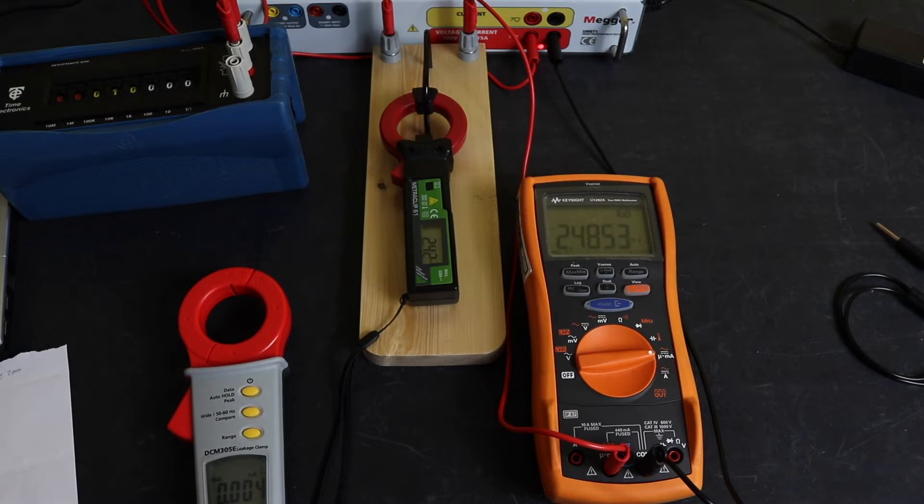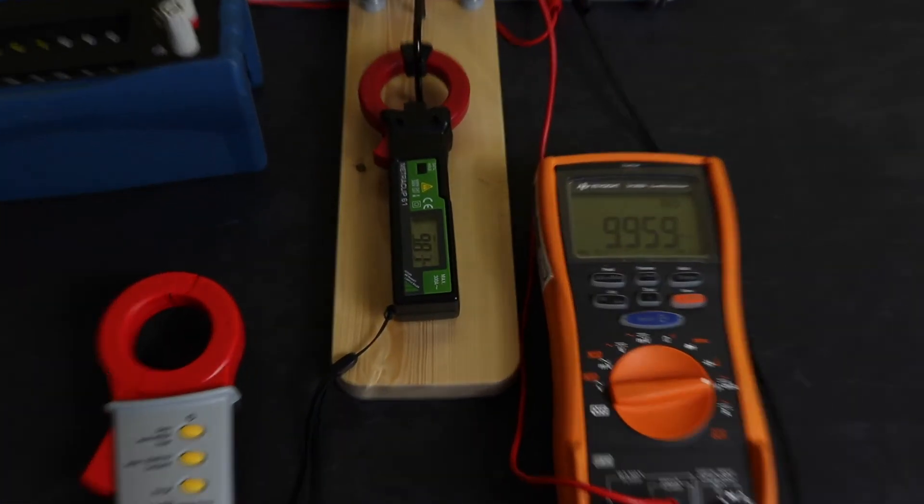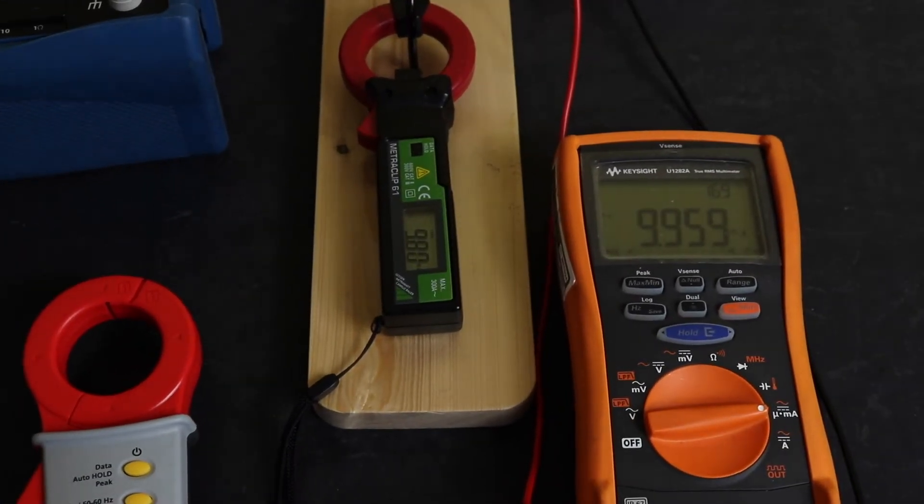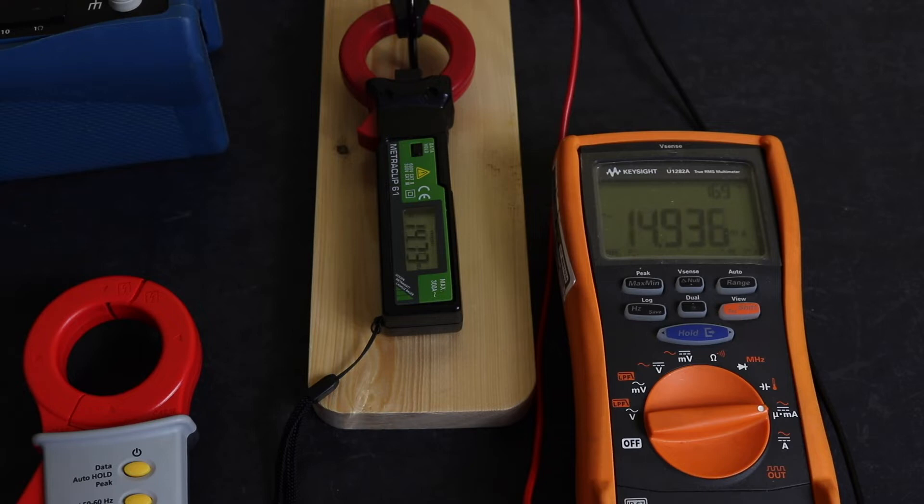Should be 2.5 milliamps, down to 10 milliamps. Don't know how well you can see that, so zoom into displays a little bit more might help out. Probably a bit late when you're halfway through the test, though, isn't it? 15 milliamps now.